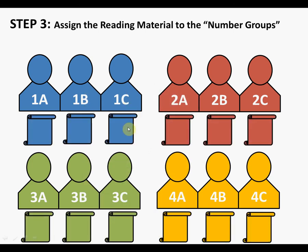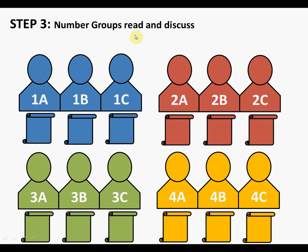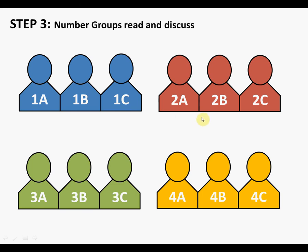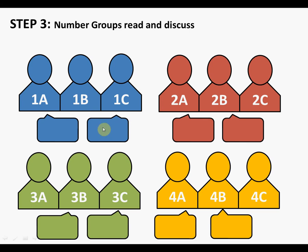Now that each student knows what they'll be reading, they need to read it. Some groups may read it individually, and some might split it up and then discuss. It's very important that they digest what they're reading. While discussing, they need to ask: what was this article about, and what did we learn? Each student must understand the material well enough to explain it to others. Each numbered group reads and discusses their segment well enough that they can teach it.